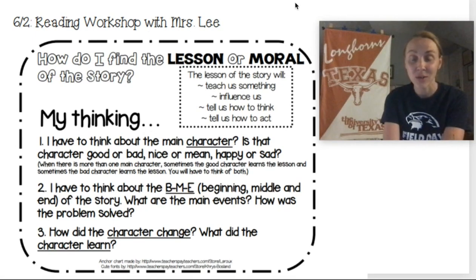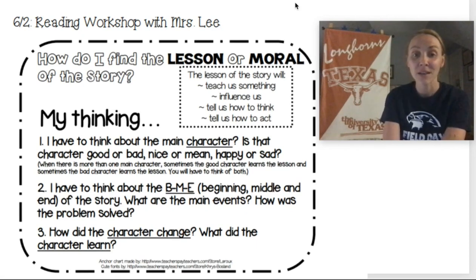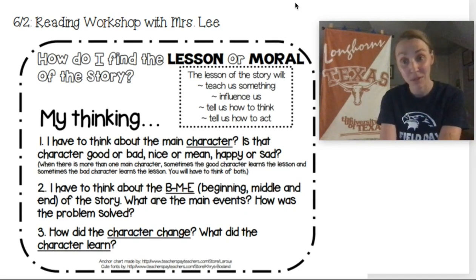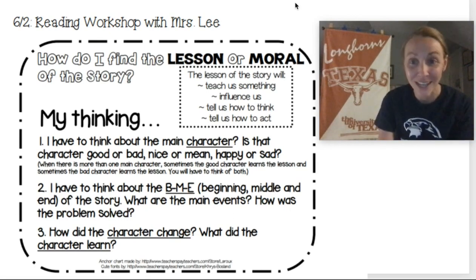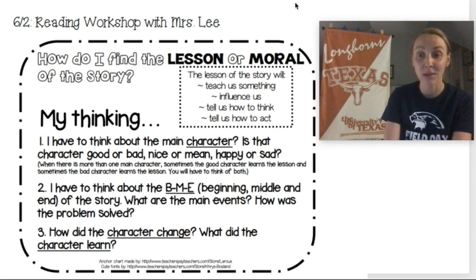In order to think about what the lesson or the moral of the story is, we need to think about the main character. A lot of times the lesson is going to be about the main character. So we want to think: was that character the nice or mean character? Were they the one that made a good choice or maybe not such a great choice? Did they cause the problem or not? Now, sometimes there's another character — maybe one is a bully, kind of mean, the other is not. But maybe in the end of the story, they both learn a lesson. We should always be thinking about each character, and sometimes we can share a lesson about one character, sometimes about two characters.